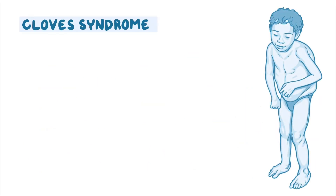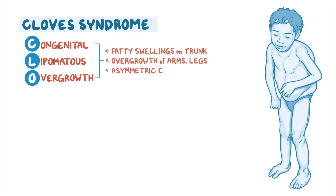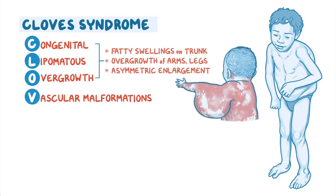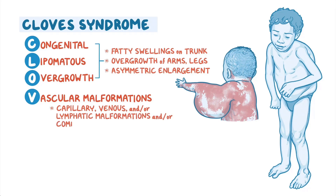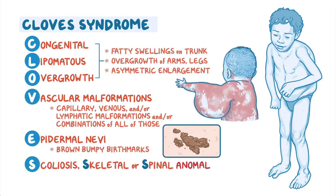CLOVES syndrome involves congenital lipomatous overgrowth, resulting in fatty swellings on the trunk and/or overgrowth of arms and/or legs that leads to asymmetric enlargement, vascular malformations including capillary, venous, and/or lymphatic malformations, and/or combinations of all of those, epidermal nevi presenting as brown bumpy birthmarks on the skin, and scoliosis, skeletal, or spinal anomalies.